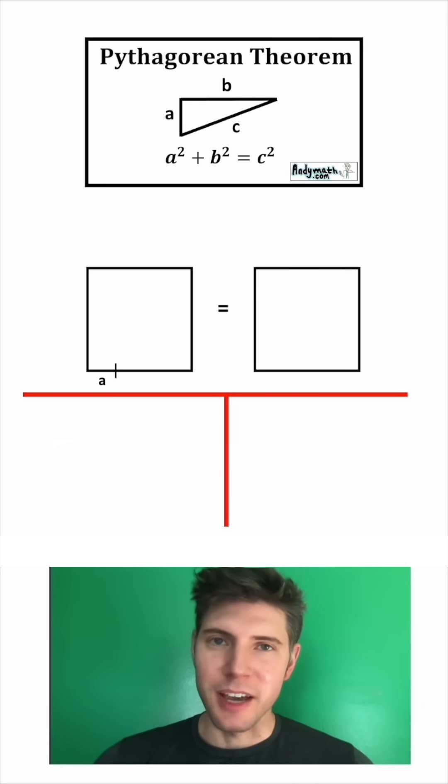Then I'll make a cut that is the same size as A, and I'll do the same thing to the other square. Do the same thing to every side of that square, and the same thing to every side of this square. And then this other piece will be B.